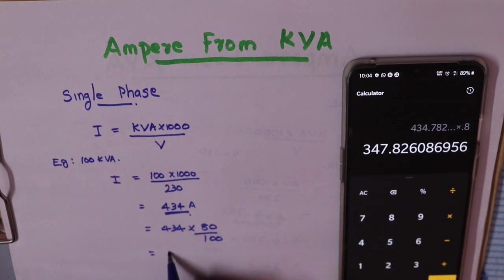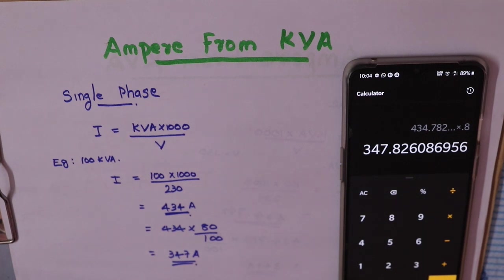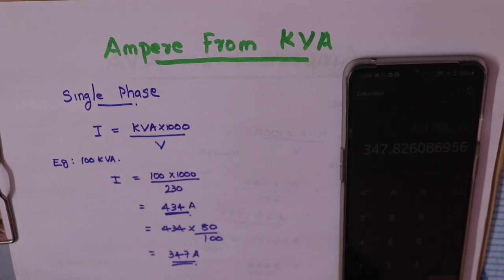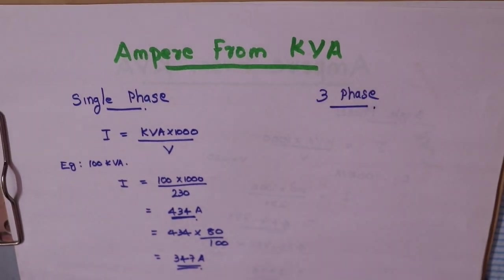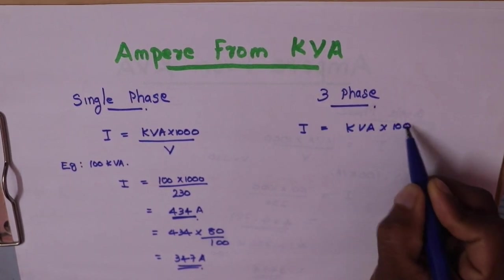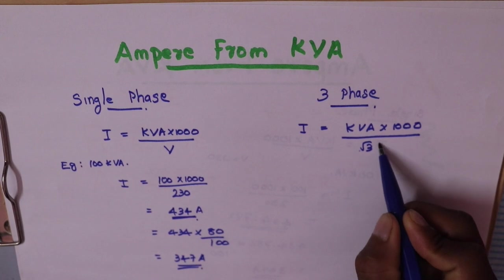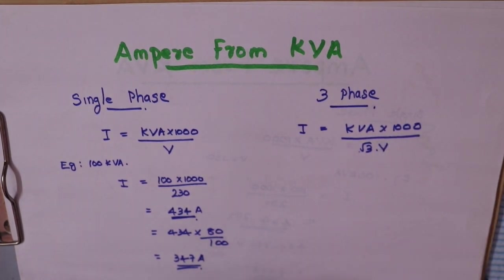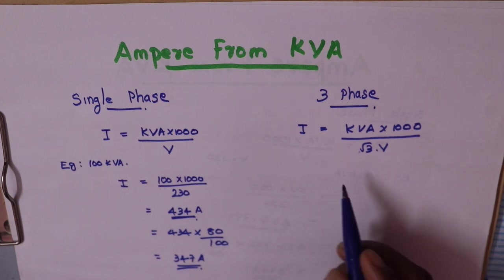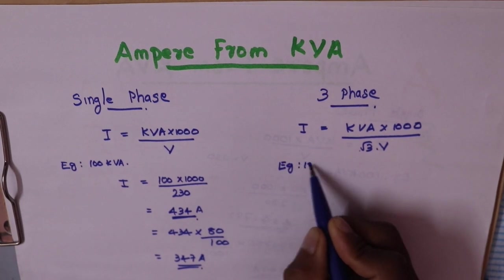The result is approximately 1.5A for the single-phase generator at full load.